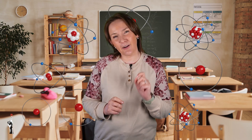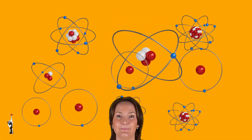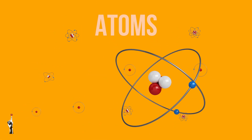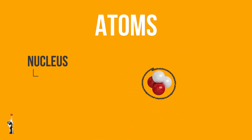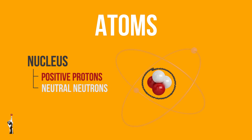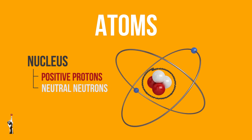All matter is made up of atoms — tiny particles with even smaller parts. Atoms have a nucleus with positive protons and neutral neutrons, surrounded by negative electrons.